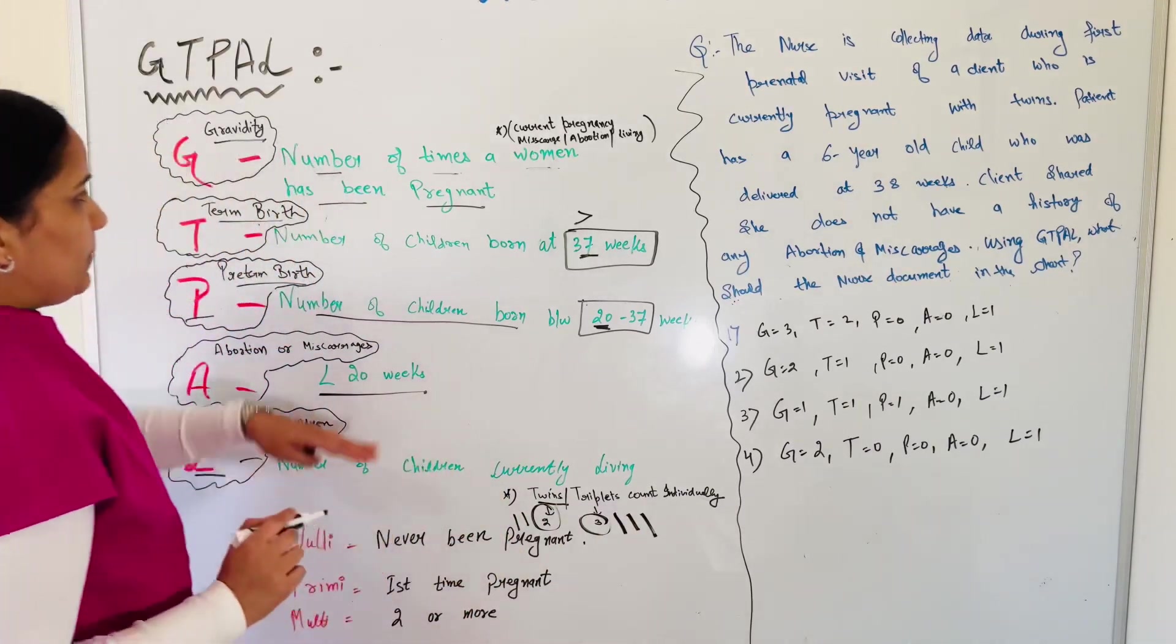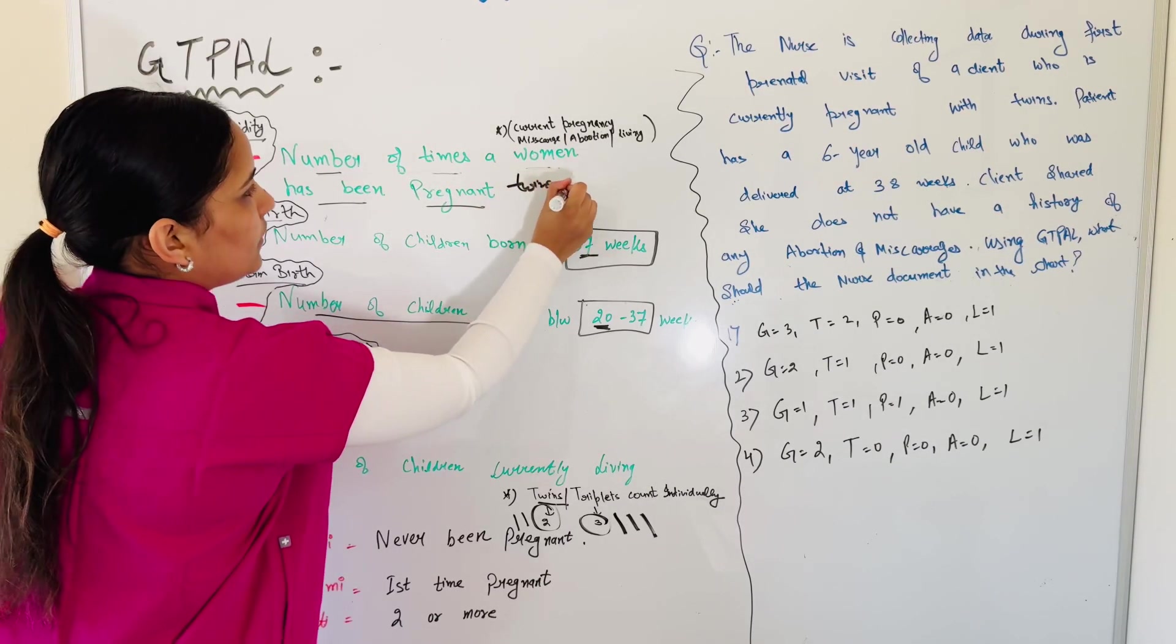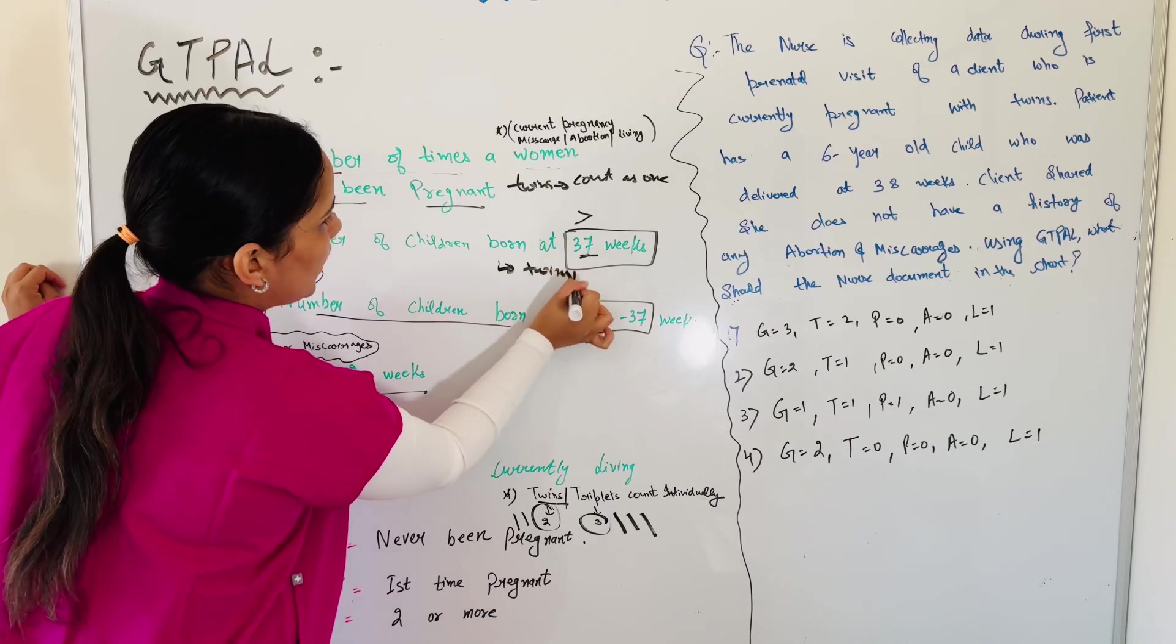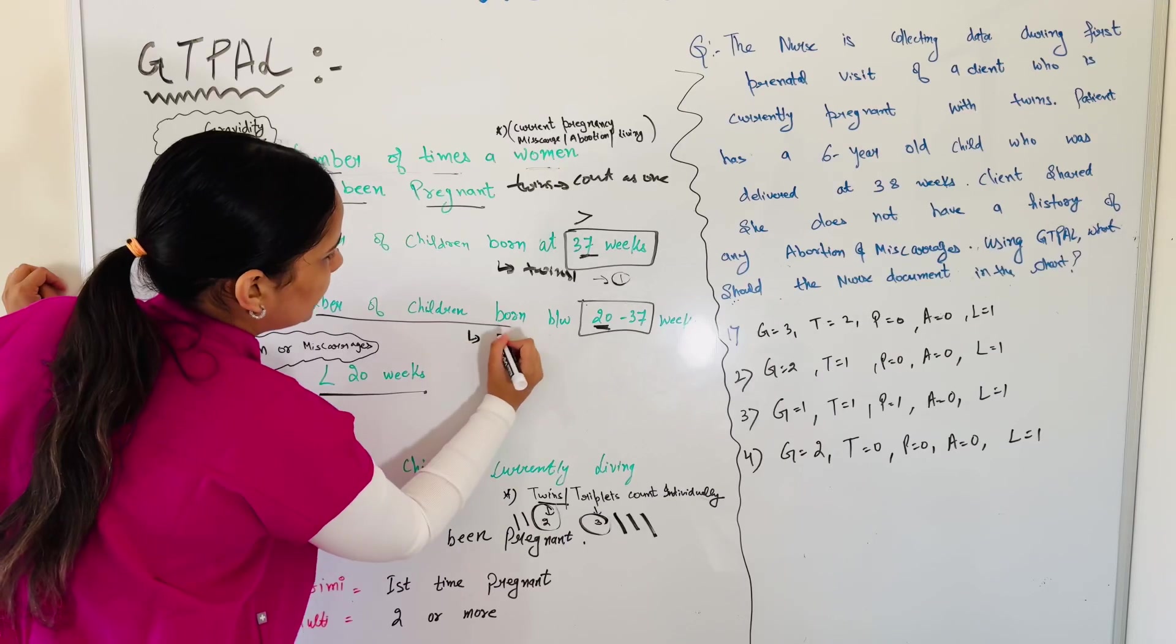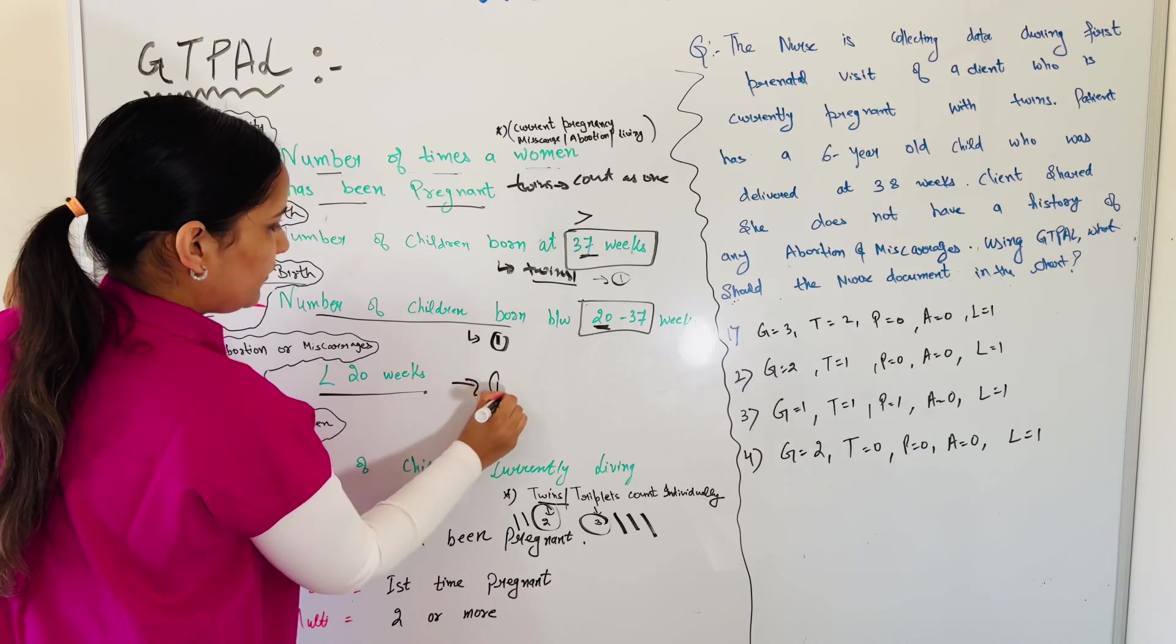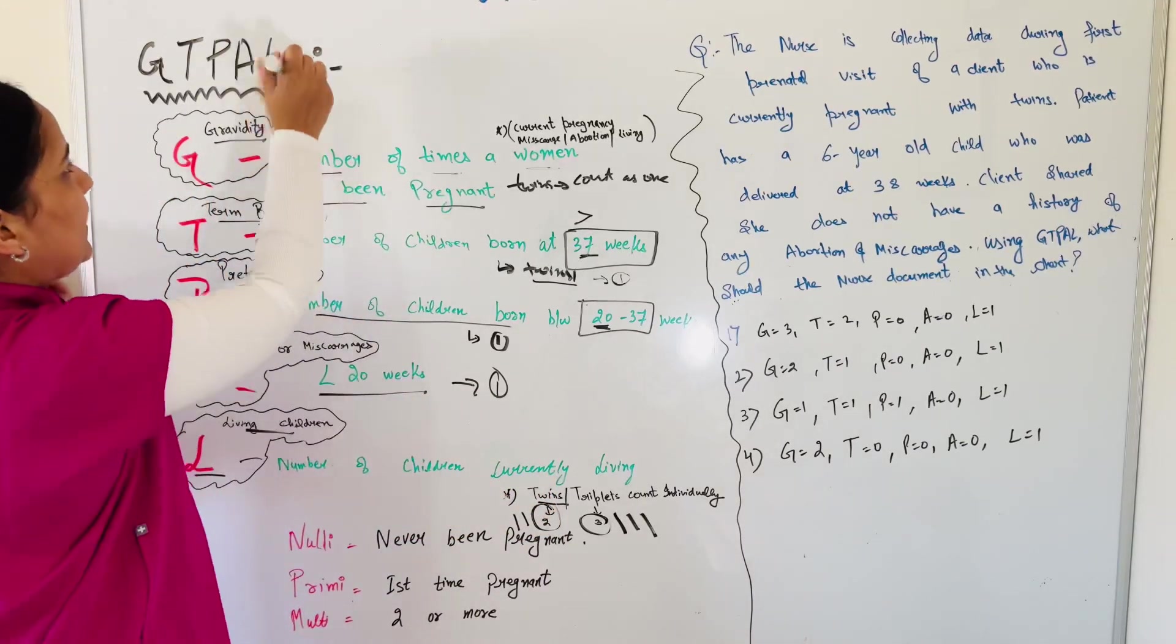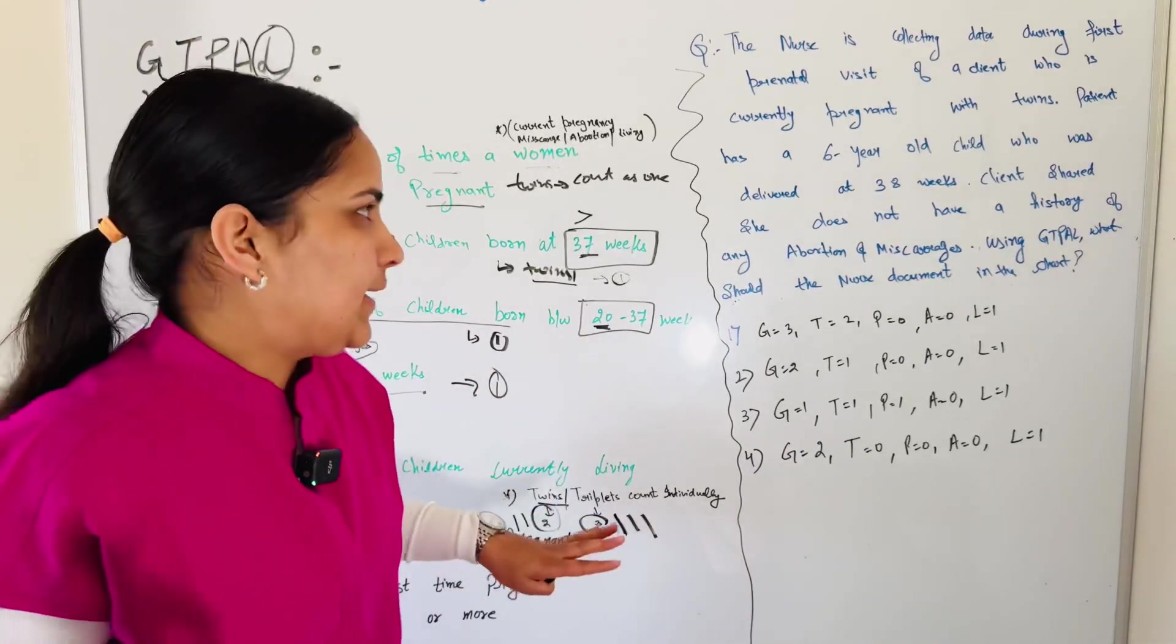If there are twins, we won't count them as one, we count them individually: 1, 2, 3. 1, 2. But here if we have twins in T, count as 1. In P preterm, twins count as 1. Abortion and miscarriage, twins or triplets count as 1. L for living children, this is the only thing in GTPAL where we count children, not the pregnancies.